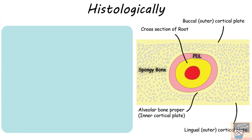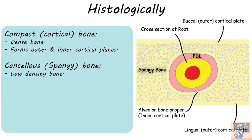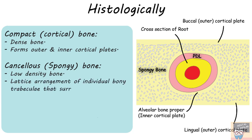Histologically, bone may be classified as compact and cancellous. Compact bone, also known as cortical bone, has relatively higher density compared to cancellous bone. It forms the outer and inner cortical plates around a tooth. The cancellous or spongy bone has relatively lower density and forms a lattice-like arrangement of individual bony trabeculae that surround soft tissue, which is the marrow — yellow or red bone marrow.